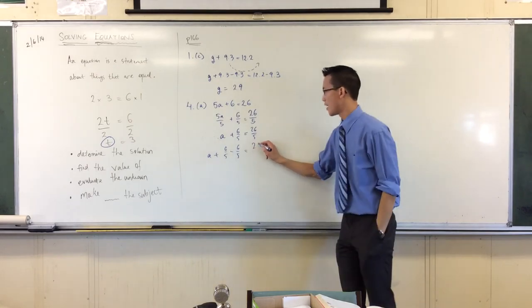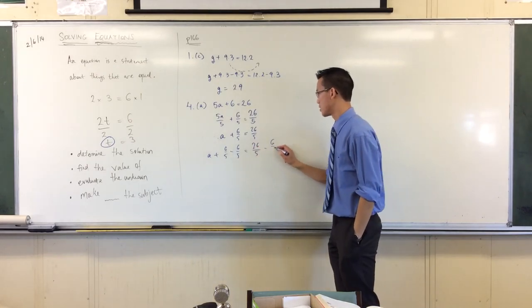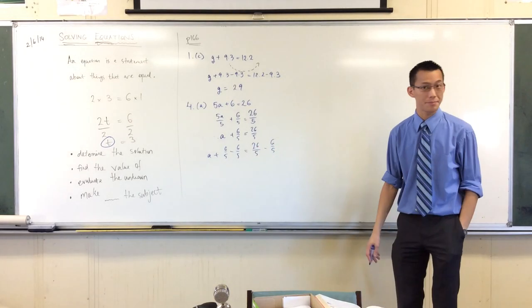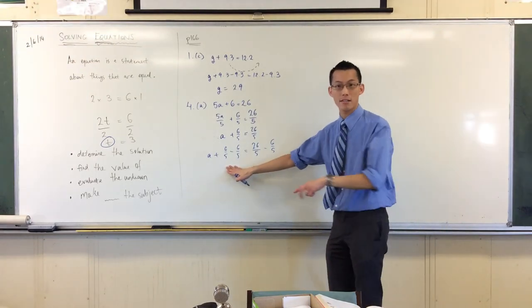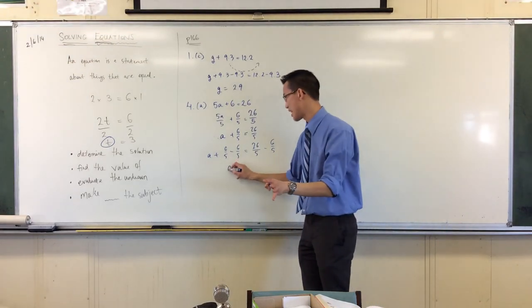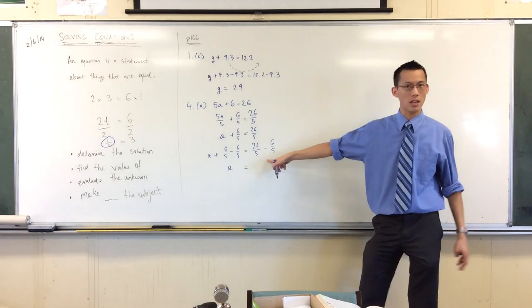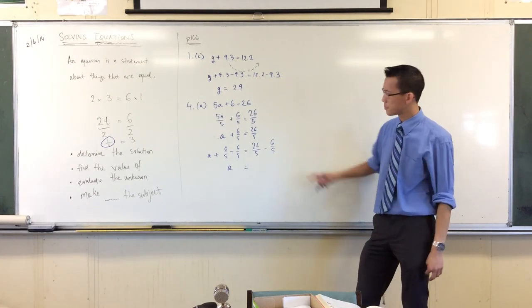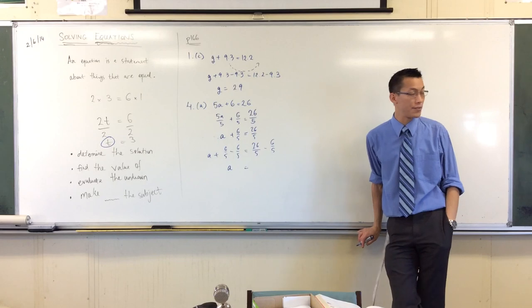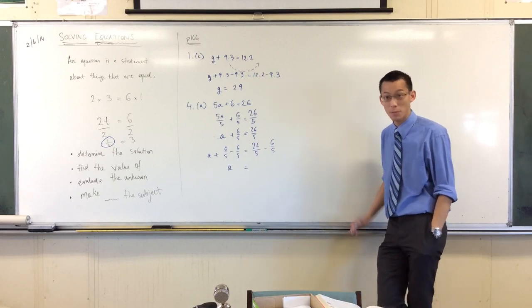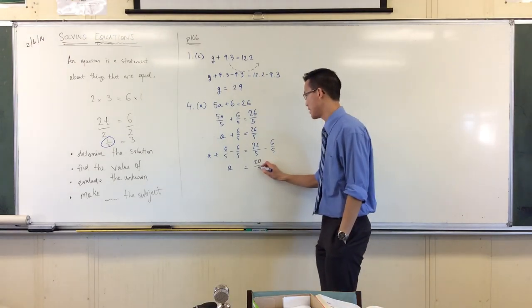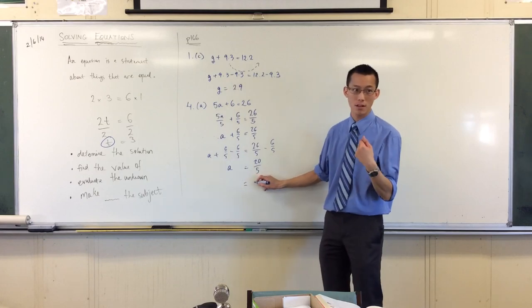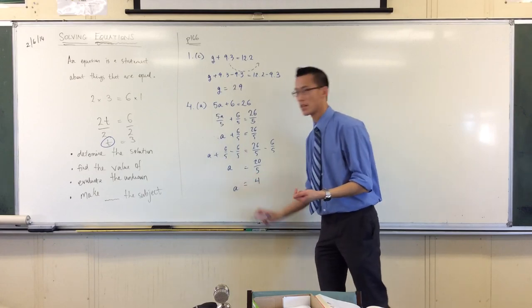So subtract that 6 over 5. If I do it to one side I better do it to both. So on this side those 6 over 5s are going to cancel, you just get a. What's going to happen over here? 26 over 5 minus 6 over 5, denominators the same, it'll be 20 over 5, and 20 divided by 5 is just 4. It's 4 over 1.